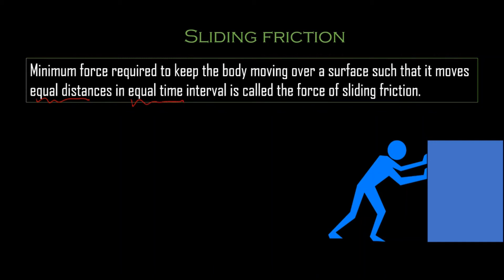That means it moves at uniform speed — in uniform motion. For example, once you're pushing a bed and it has started moving, it will move smoothly. At that time, the friction acting is called sliding friction.